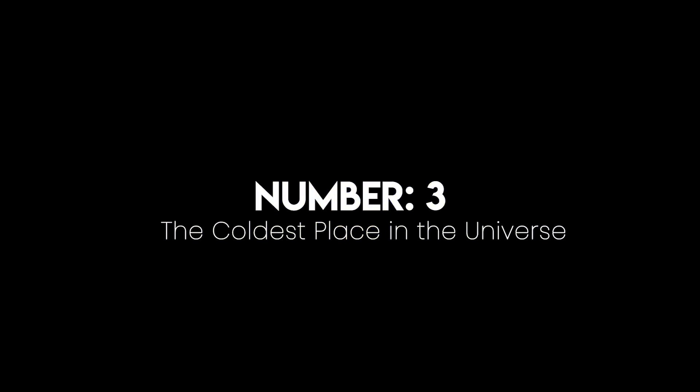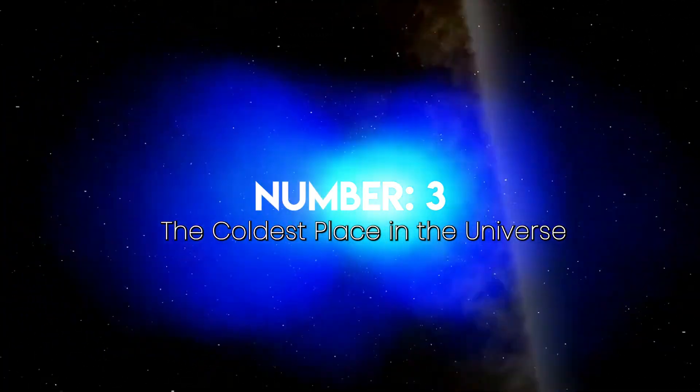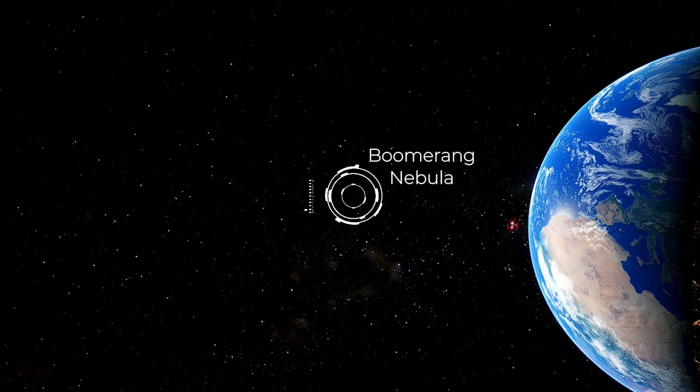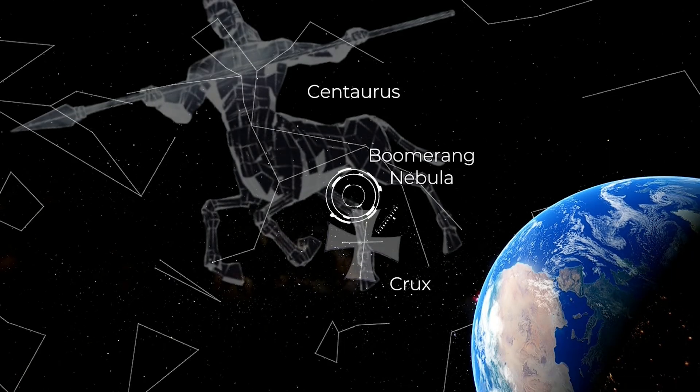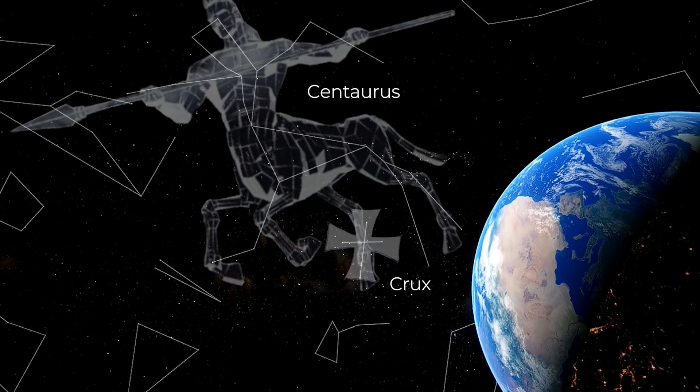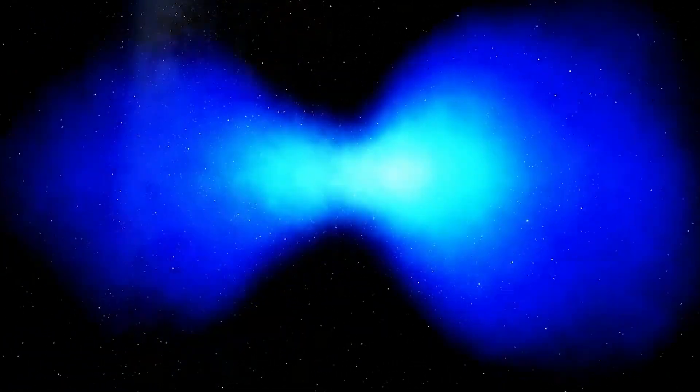Let's move on to Number 3: The coldest place in the universe. The Boomerang Nebula is a glowing ghost in the Centaurus constellation. It's the coldest known natural place in the universe, temperature one Kelvin, just above absolute zero. If you didn't know, that's colder than deep space, colder than the faint afterglow of the Big Bang itself.